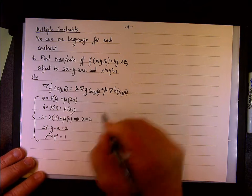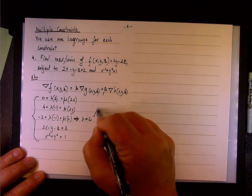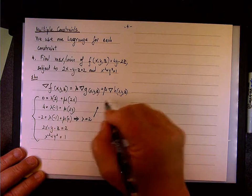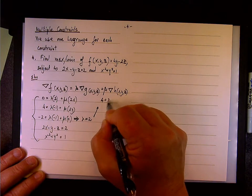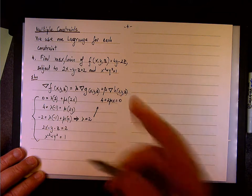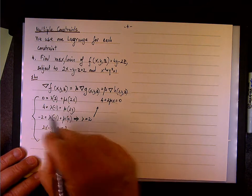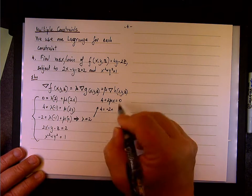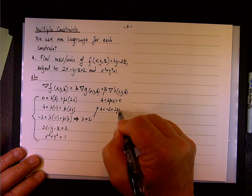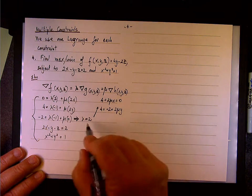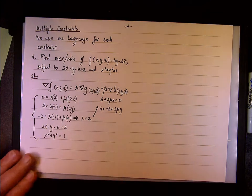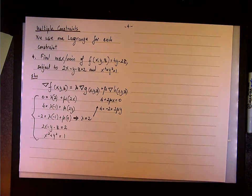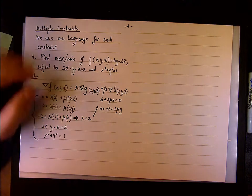Therefore lambda equals 2. That makes life a little bit easier. Looking at the first equation with lambda equals 2: 2 times 2 gives 4 plus 2 mu x equals 0. And for the second equation with lambda equals 2: 4 equals negative 2 plus 2 mu y.